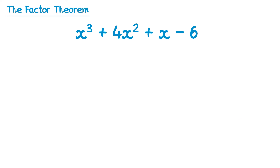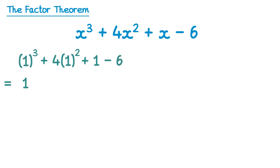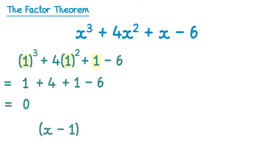Now let's look at this cubic expression. I'm going to substitute in some numbers — if I substitute a number and get zero as the result, then I know I've found a factor. Starting with 1: 1 cubed plus 4 lots of 1 squared plus 1 take 6. 1 cubed is 1, 4 lots of 1 squared is 4, plus 1, take 6 — and 6 take 6 does give you 0. Since we substituted in positive 1, the factor is x take away 1.